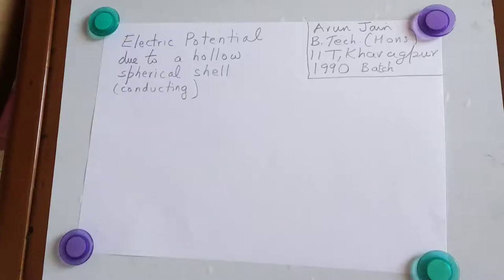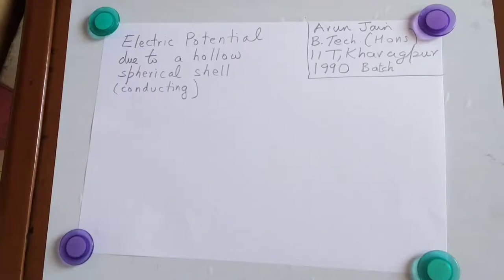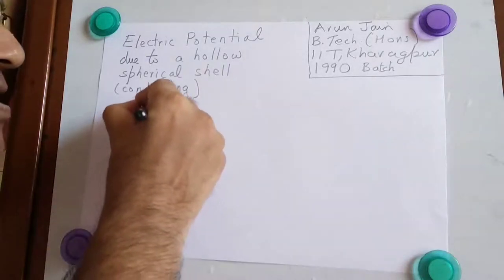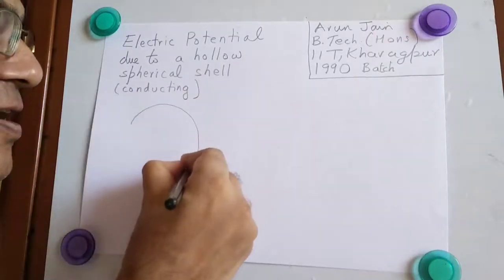In this lesson we are going to calculate the electric potential due to a hollow spherical shell conductor. So this is a spherical conductor, hollow.